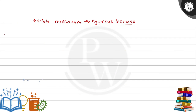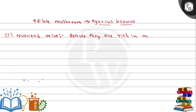Part C asks: what is the nutritive value? So why do we consume mushrooms? Mushrooms are consumed because they are rich in minerals and vitamins. Edible mushrooms are high in minerals and vitamins, which is why we consume them. Their nutritive value is that they are rich in minerals, vitamins, and more.